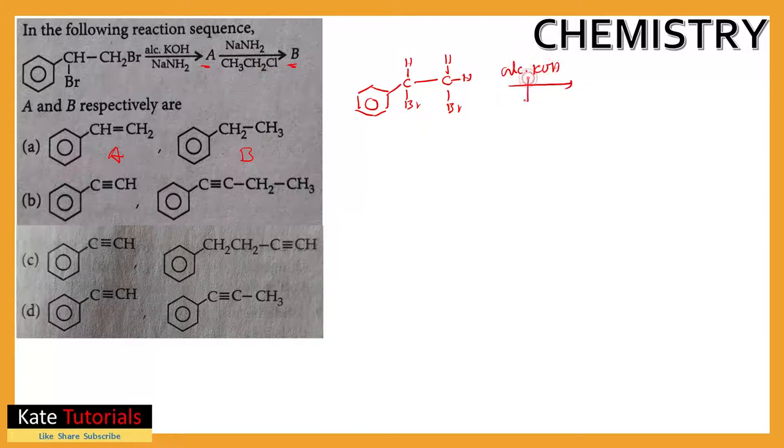I have told alcoholic KOH is a strong base, a good base. It is a good base; it takes H+. So it will do beta elimination, which you have studied from the alkene chapter.